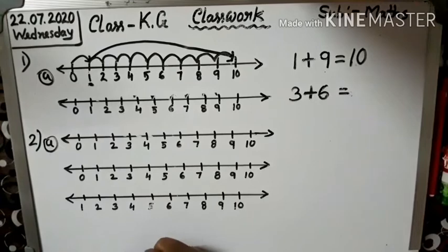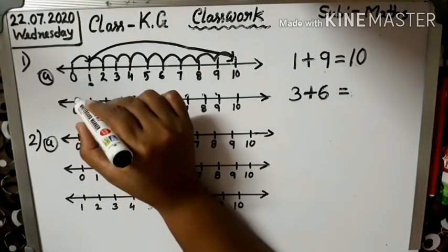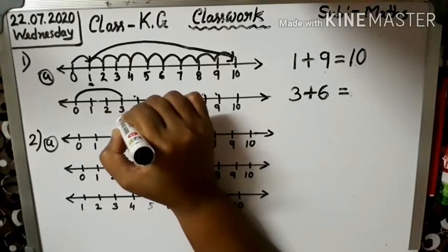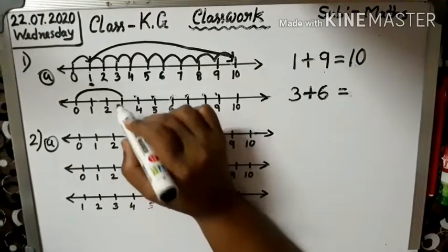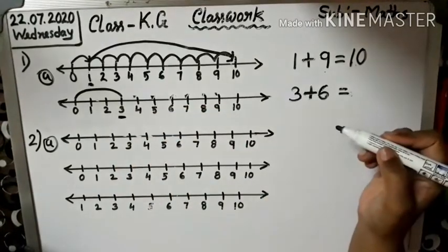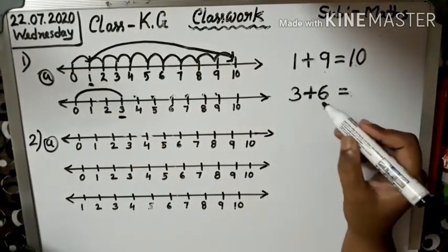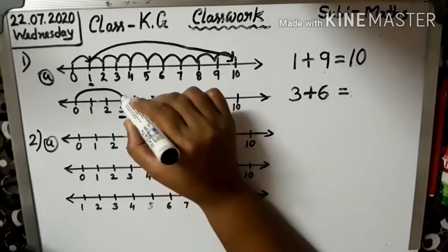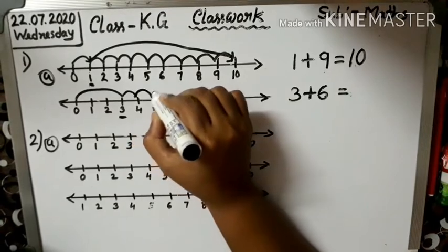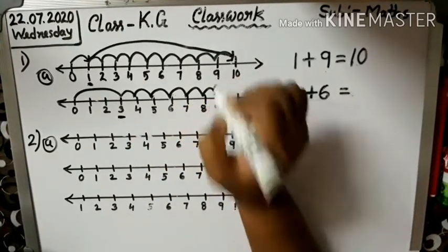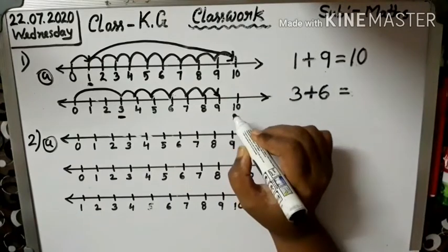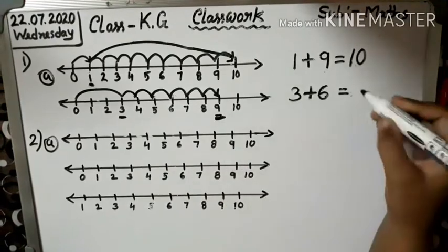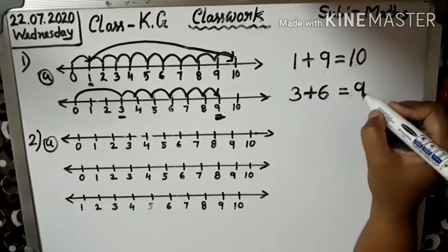Next, keep your finger on 3. So, plus 6. Add plus 6, then you jump 6: 1, 2, 3, 4, 5, 6. Okay. So you reach number 9. Right here, number 9.